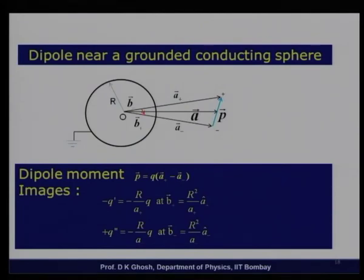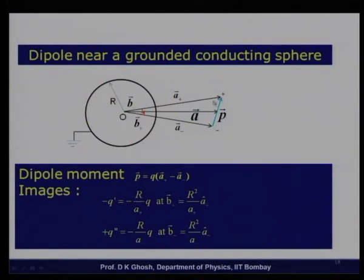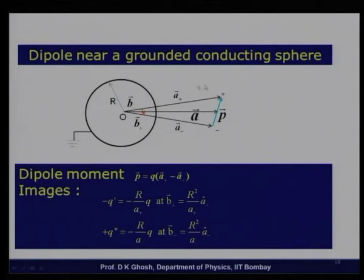Now let us look at a slightly different and more difficult question: instead of putting a single charge in front of a grounded conducting sphere, let me put a small dipole there. The dipole is approximated as a charge +q and −q separated by a small distance d.